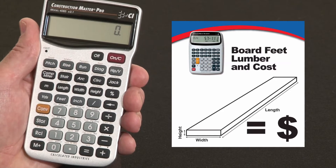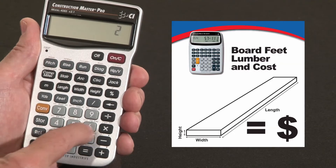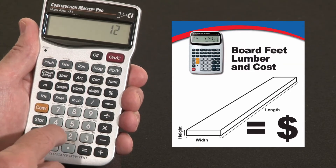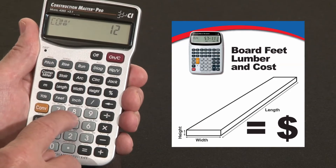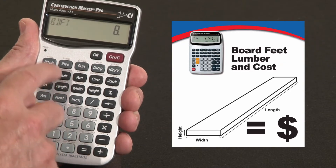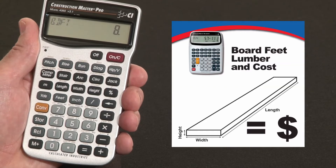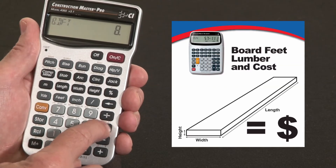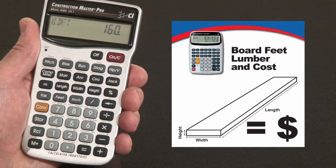Say our lumber list shows 20 pieces of 2x4x12. The way I'd enter that is 2x4x12, then Convert, and over the 8 key it says Board Feet — that's the second function. So 2x4x12 is 8 board feet. Say I need 20 of those: times 20 equals 160 board feet.